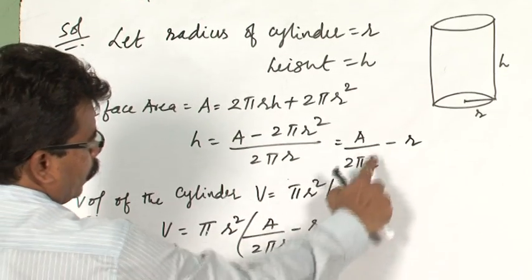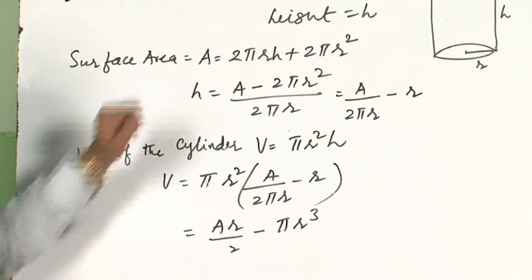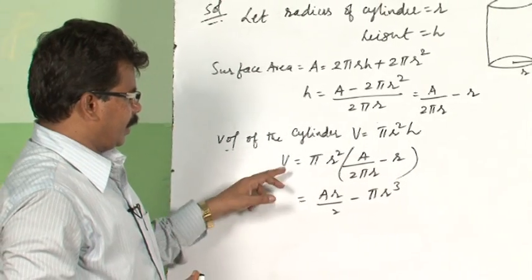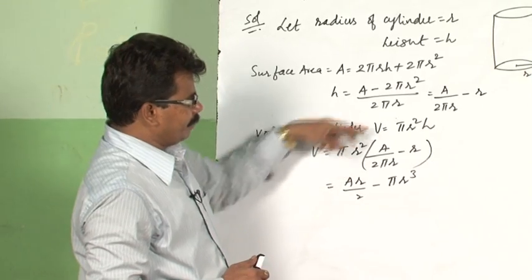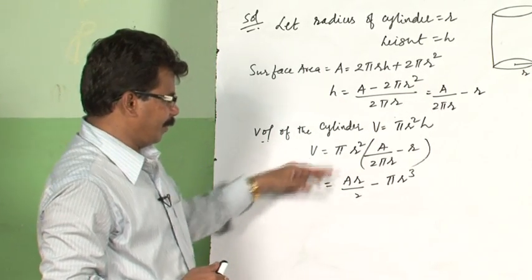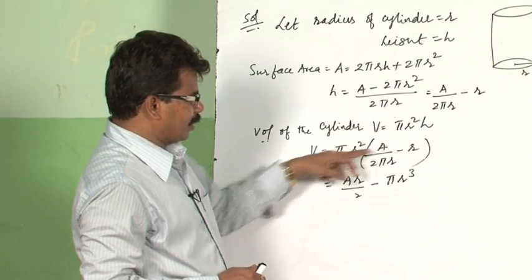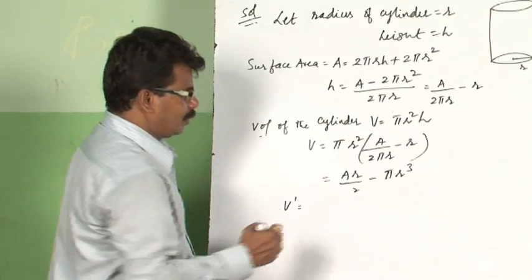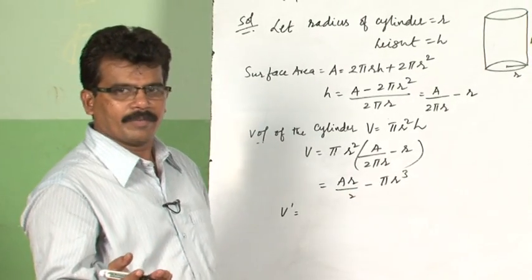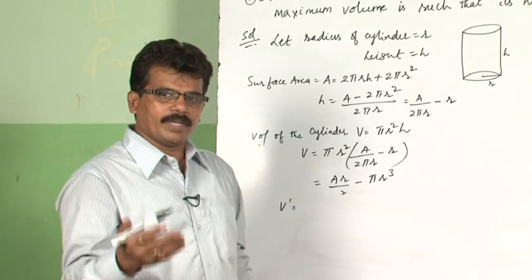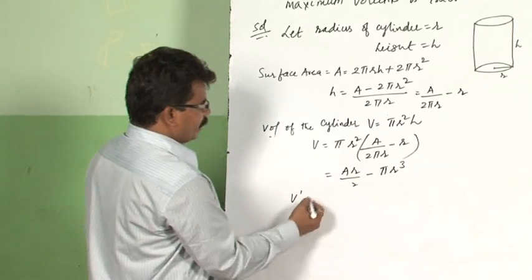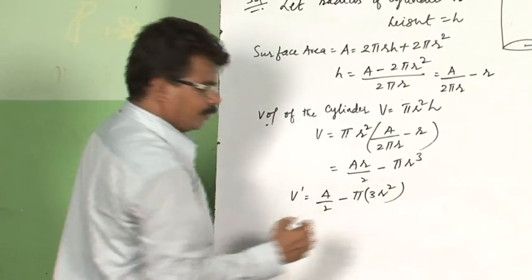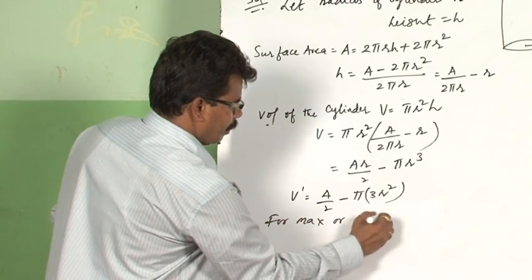After finding h in terms of r, the volume of the cylinder is V = πr²h. Substituting, V = πr²(A/(2πr) − r) = Ar/2 − πr³. For maximum or minimum, we find V' with respect to r: V' = A/2 − 3πr². For maxima or minima we equate V' = 0.